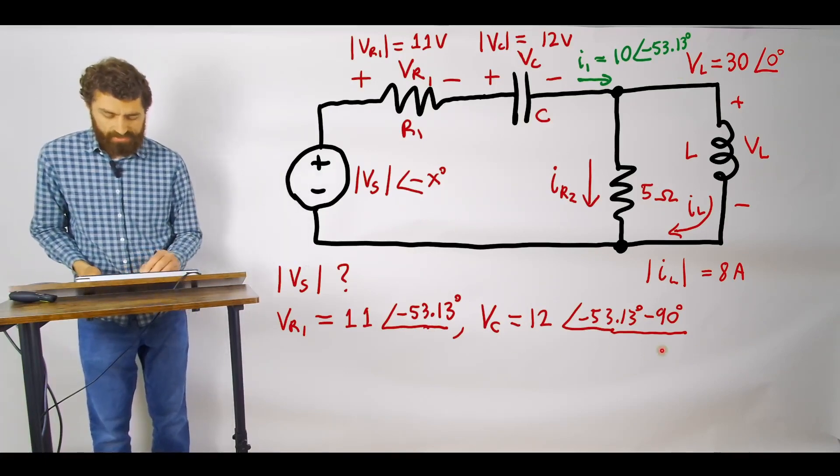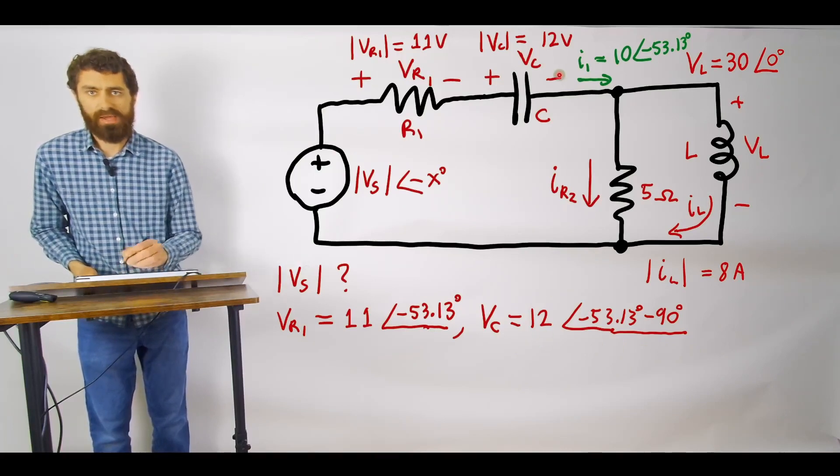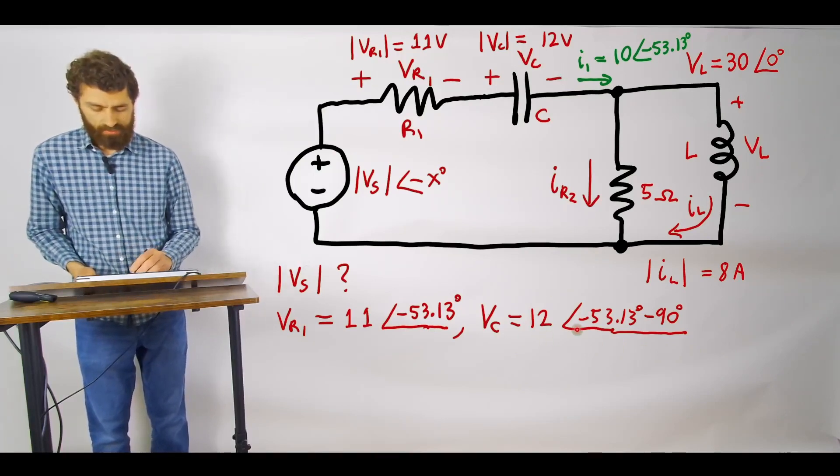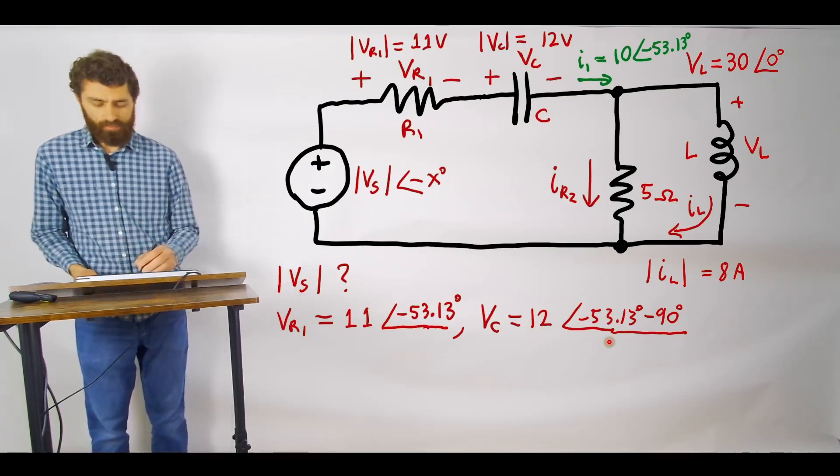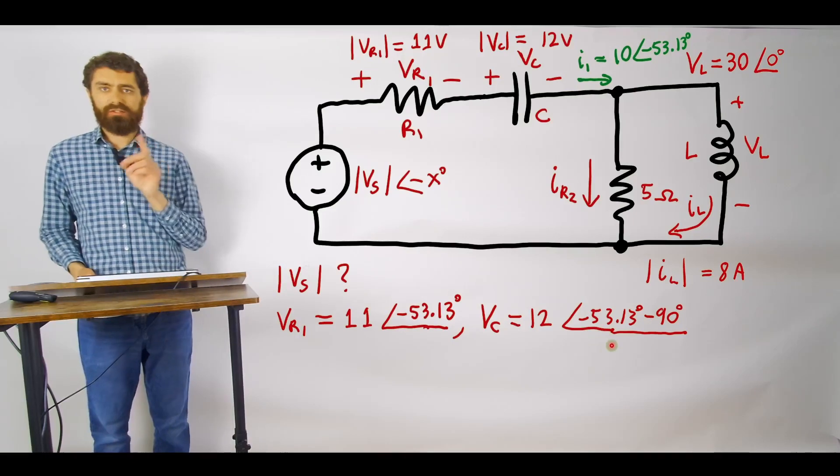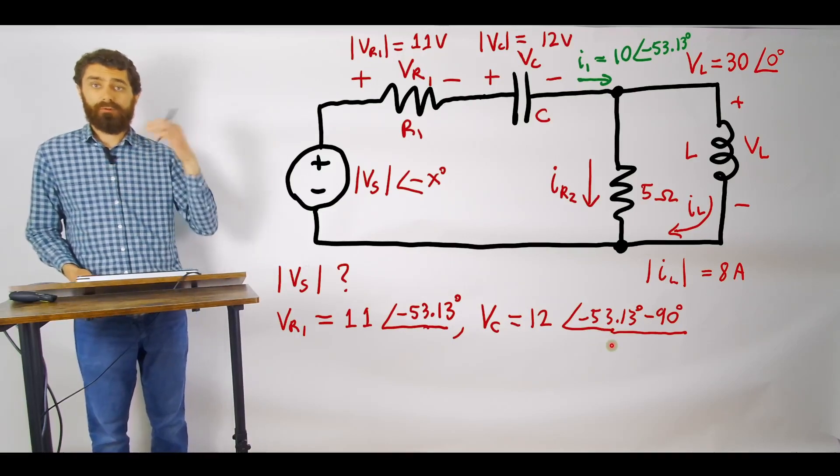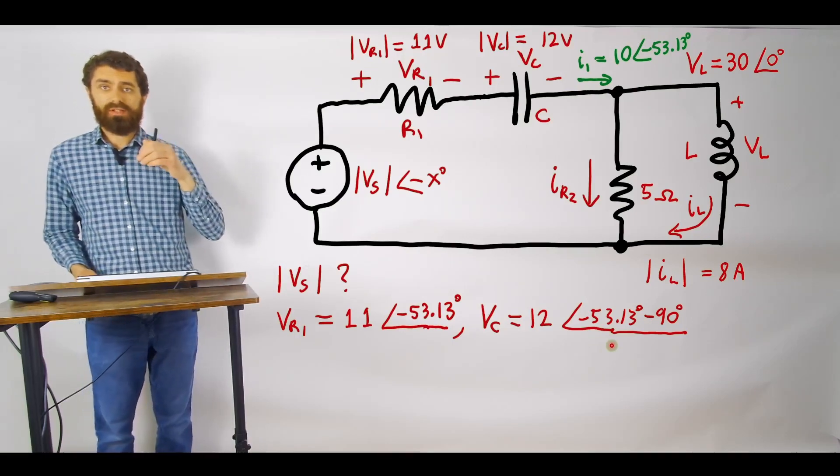Then for Vc we're given that it's 12 volts the magnitude so we just give it 12. Its angle though,